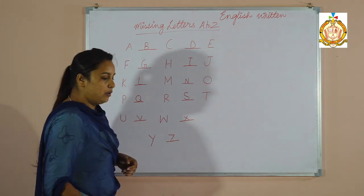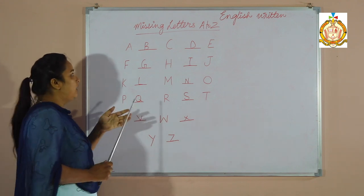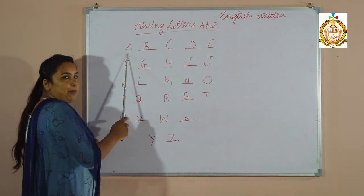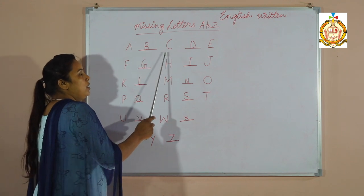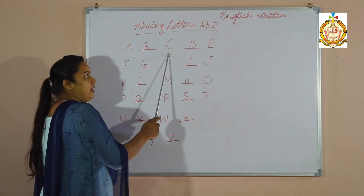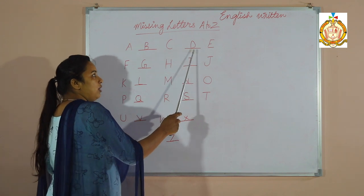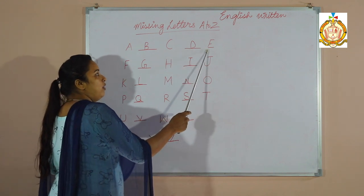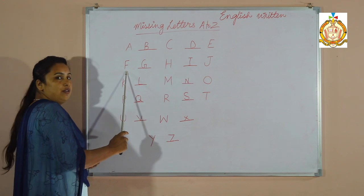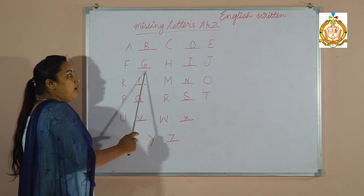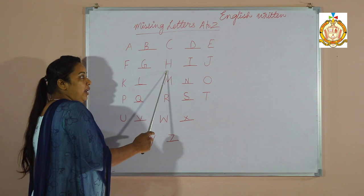Now we have to repeat again. A for Apple. B for Ball. C for Cat. D for Dog. E for Egg. F for Fish. G for Grapes. H for Hen.